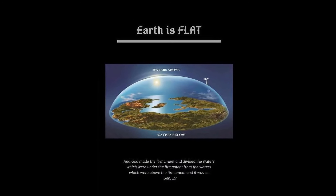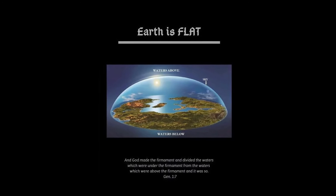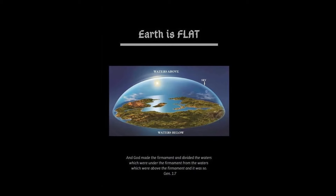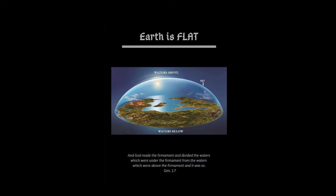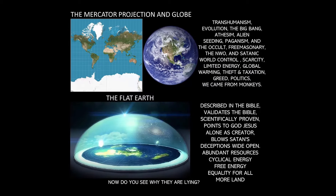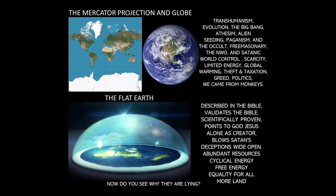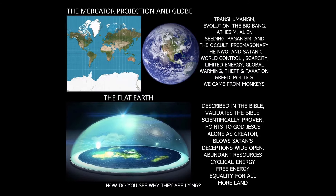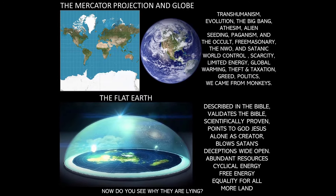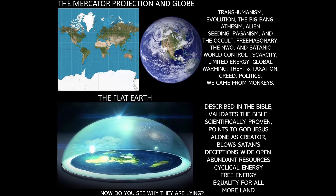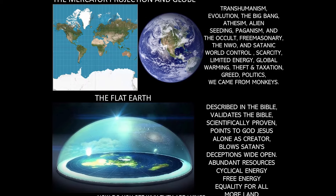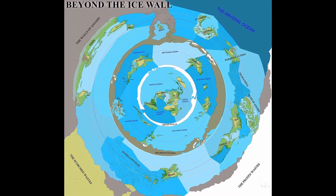Supporters point to the apparent flatness of the horizon and the lack of curvature visible from ground level as evidence for their beliefs. Some Flat Earth advocates argue that circumnavigation of the globe is actually circular movement around a flat disk, with the North Pole at the center.